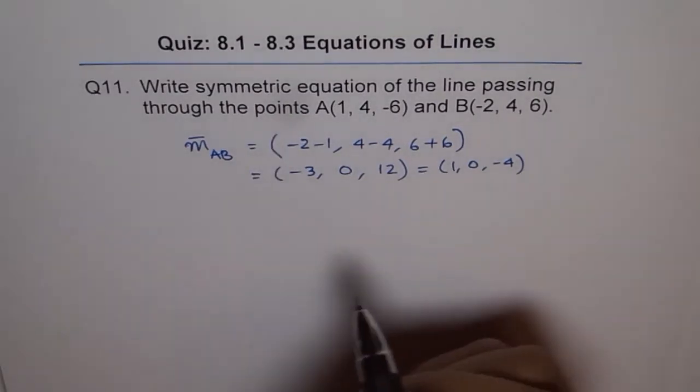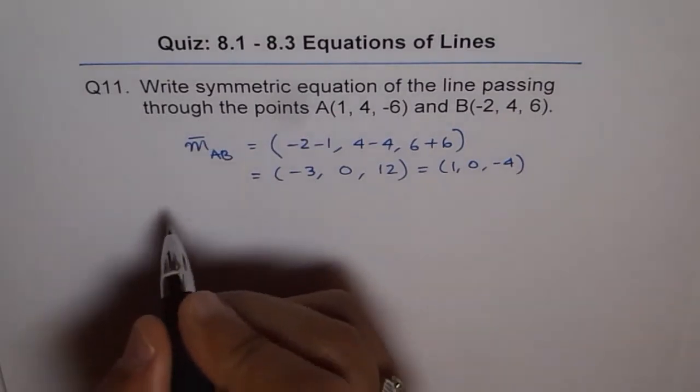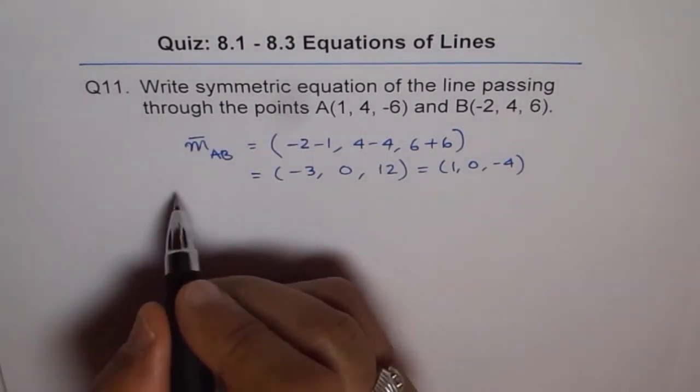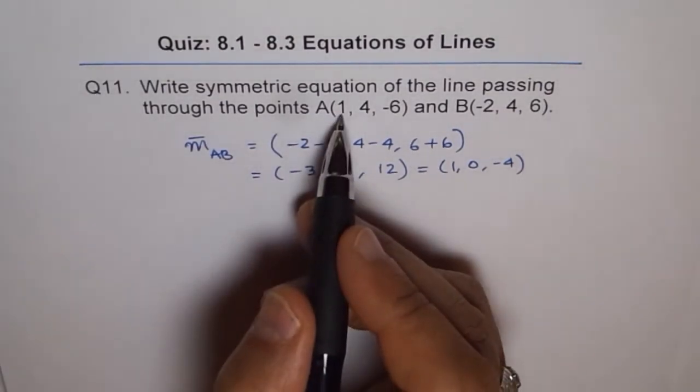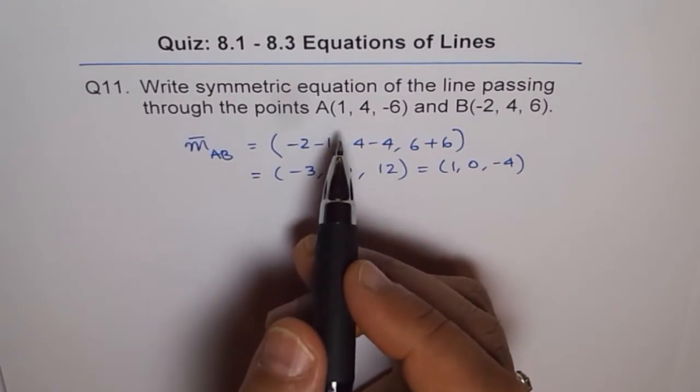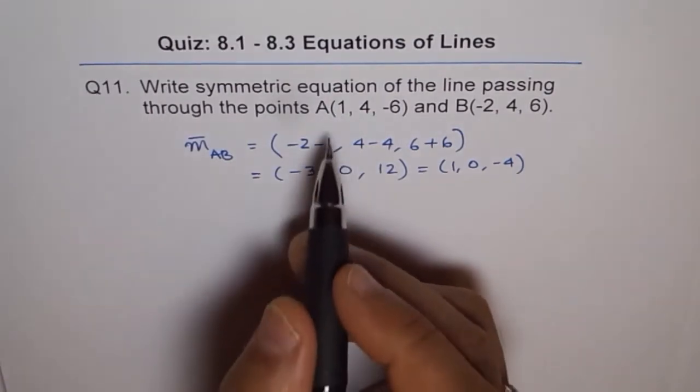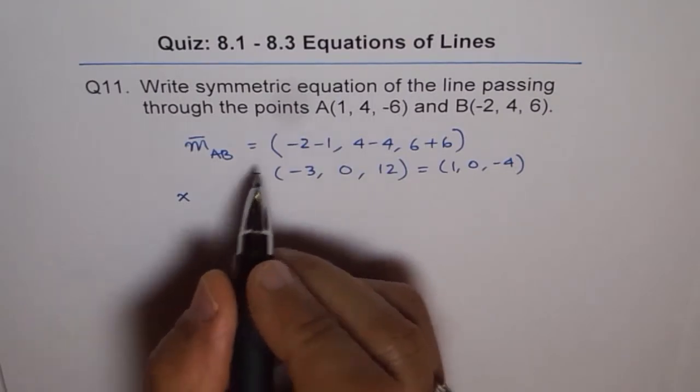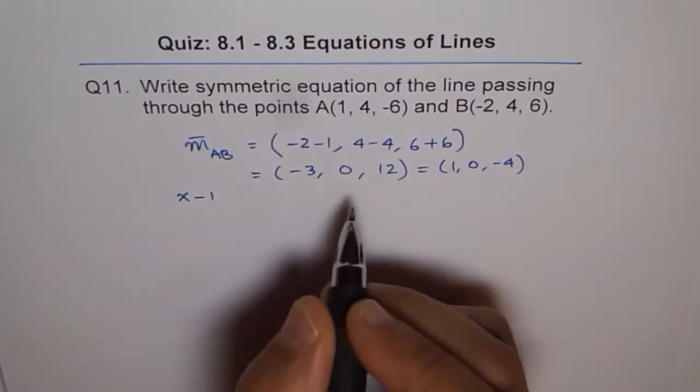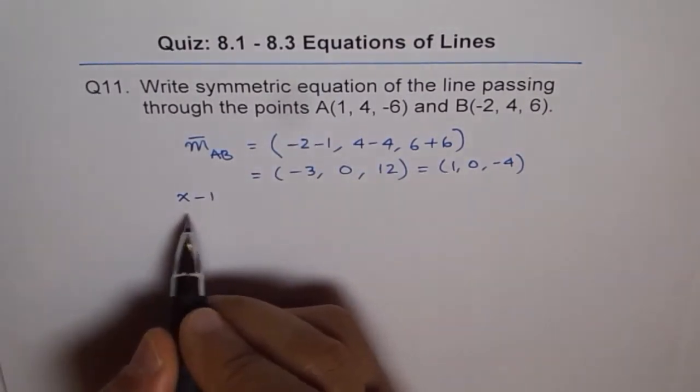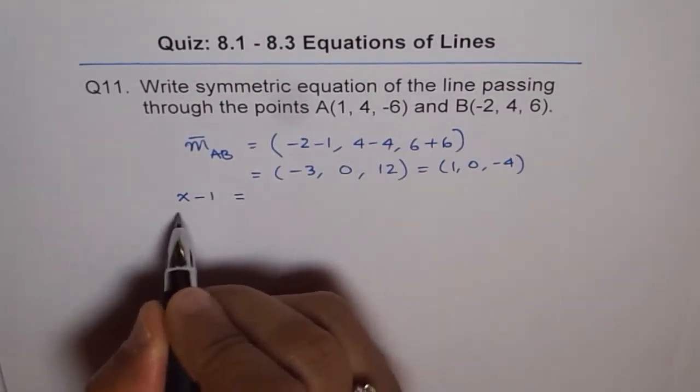So, the symmetric equation is, as you know, x minus x1 or x0, whatever you may say. We'll use this point. So, we have x minus 1 divided by 1, so no need to write that, so you get x minus 1.